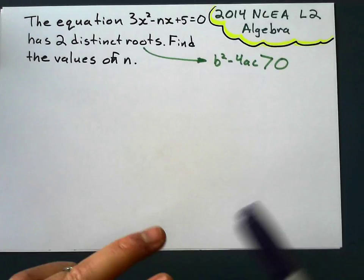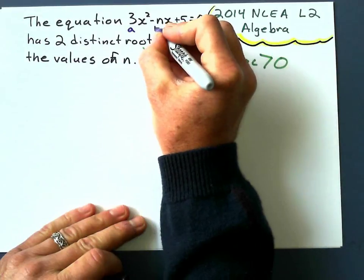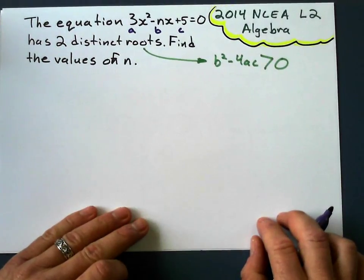And if we don't remember, a, b, and c: a is the coefficient of the x² term, b is the coefficient of the x term, which will be negative n, and c will be that constant term right there.